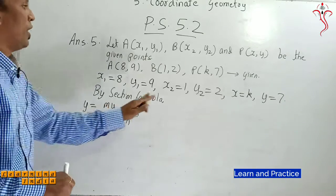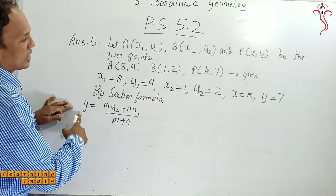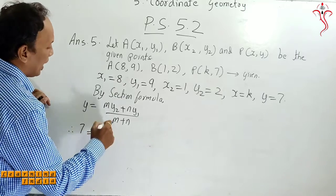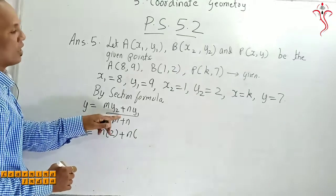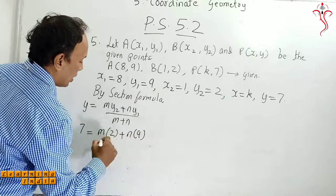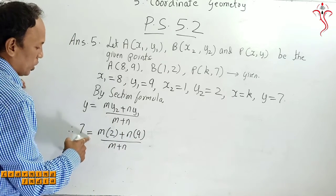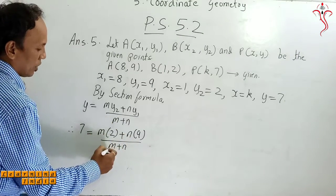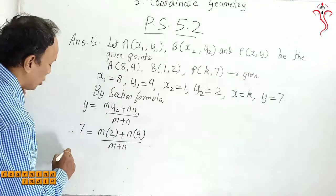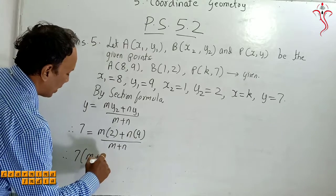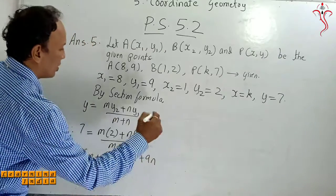I cannot put X value quickly because X value has not been given to us, so I will put the Y value here. Y value is how much? It is 7. You can put it. 7 is equal to M times Y2 value multiplied by 2 plus N times Y1 value is 9, so you can put here 9 upon M plus N as it is. Now 7 is equal to 2M plus 9N upon M plus N. M plus N here, M plus N moves to left side by cross multiplication. Therefore, 7 multiplied by M plus N is equal to 2M plus 9N. Correct.